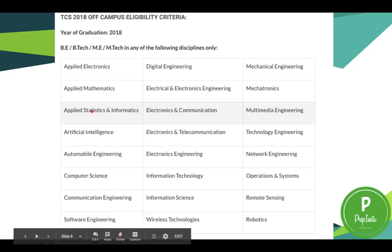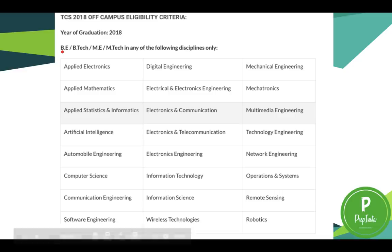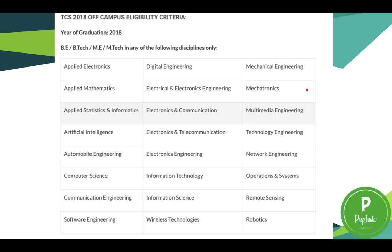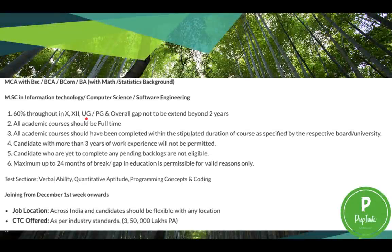Eligible branches for TCS include BE, B.Tech, ME, and M.Tech across all branches, whether applying for TCS Ninja, on-campus, or off-campus. Additionally, candidates from MCA, BSc, BCA, and BCom are also eligible. The eligibility criteria require 60 percent throughout in academics, and candidates must be in a full-time course, not a part-time one.